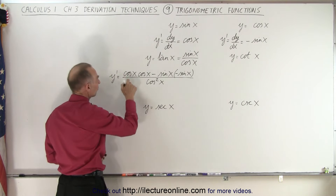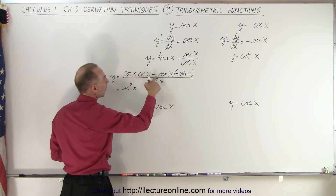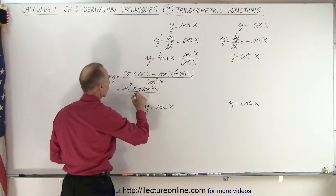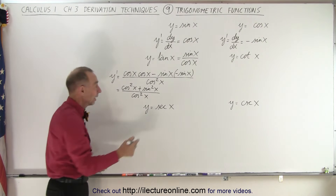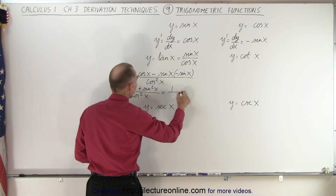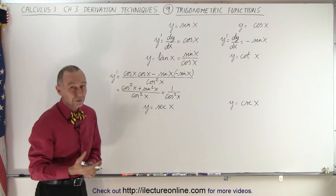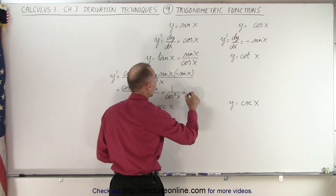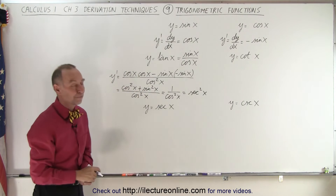Notice this gives us the cosine squared of x, minus times the minus becomes plus the sine squared of x, divided by the cosine squared of x. The numerator is equal to one, so this can be written as one over the cosine squared of x. One over the cosine is equal to the secant, so this equals the secant squared of x.